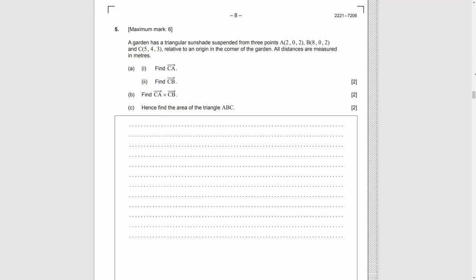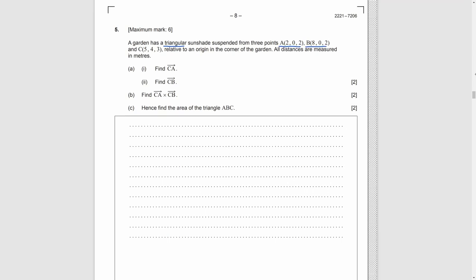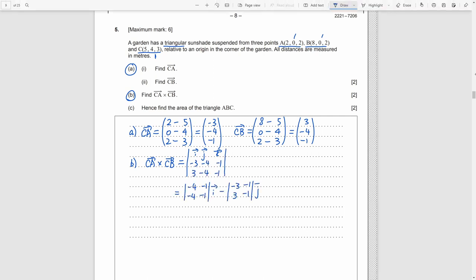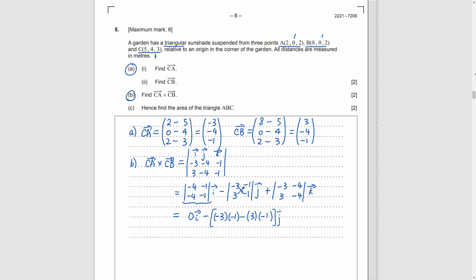Question 5. A vector question. We have a triangle with three points A, B, and C. Part A, we need to find the vector CA. So just use A's coordinates minus C's coordinates. It is negative 3, negative 4, and negative 1. Then we need to find the vector CB. So we just do the similar thing and get 3, negative 4, and negative 1. Part B, we need to find the cross product of the upper vectors. So we either use the way for finding cross product or set a program in our calculator and use it here. Anyway, we will get 0i, negative 6j, and 24k.